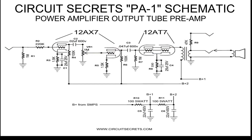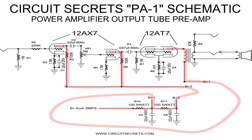Now let's track the power supply through the schematic. The filaments are not listed on the schematic so we will trace only the plate supply. The plate supply comes from our SMPS and enters the filter circuit at R10. The DC passes through R10; any alternating current present passes through C5. The voltage continues on to the output transformer and the second stage of the filter. The transformer carries the high voltage B-plus to the plate of the 12AX7. The second stage of the filter is identical to the first, and from there the B-plus continues to both plate resistors for the 12AX7, then reaches the plates.